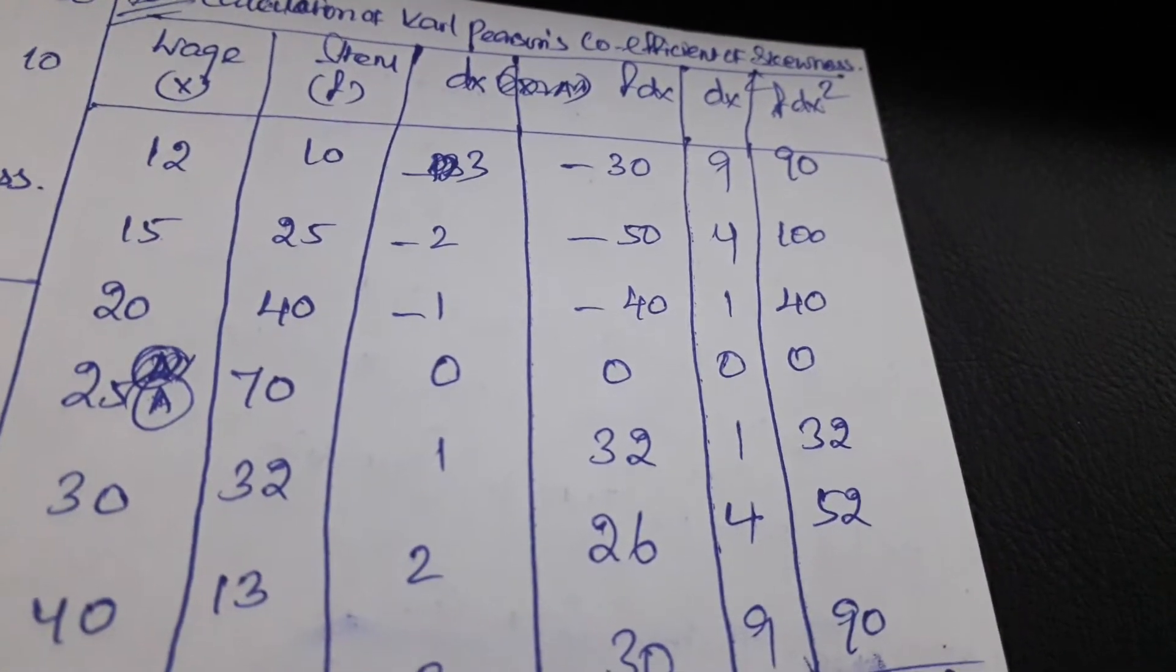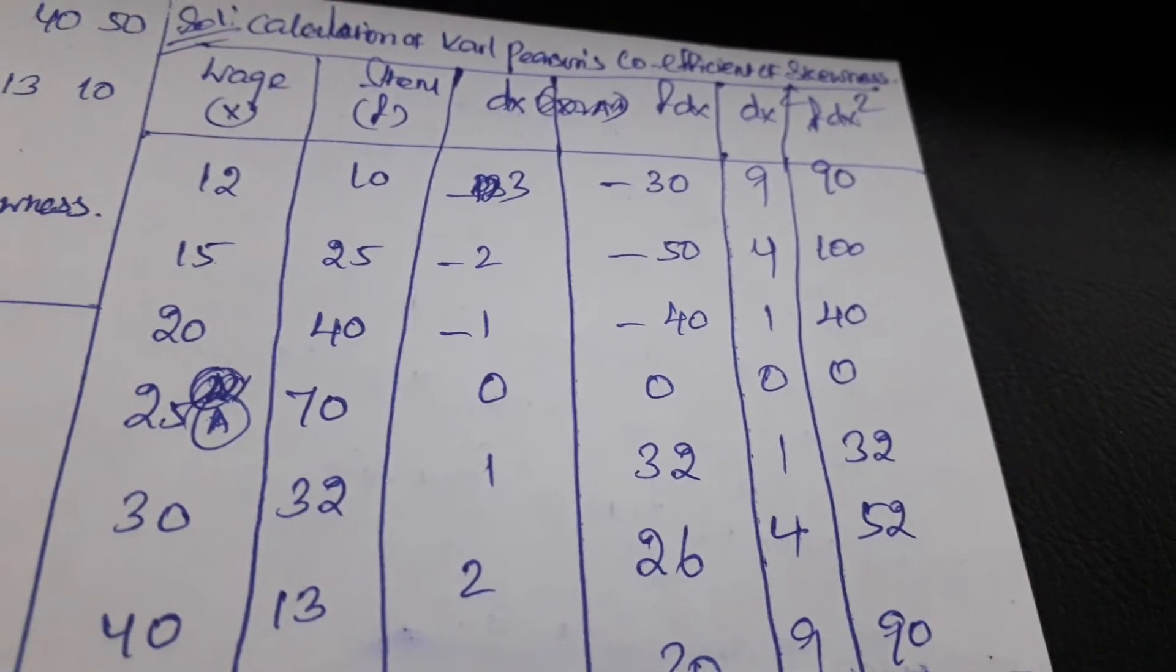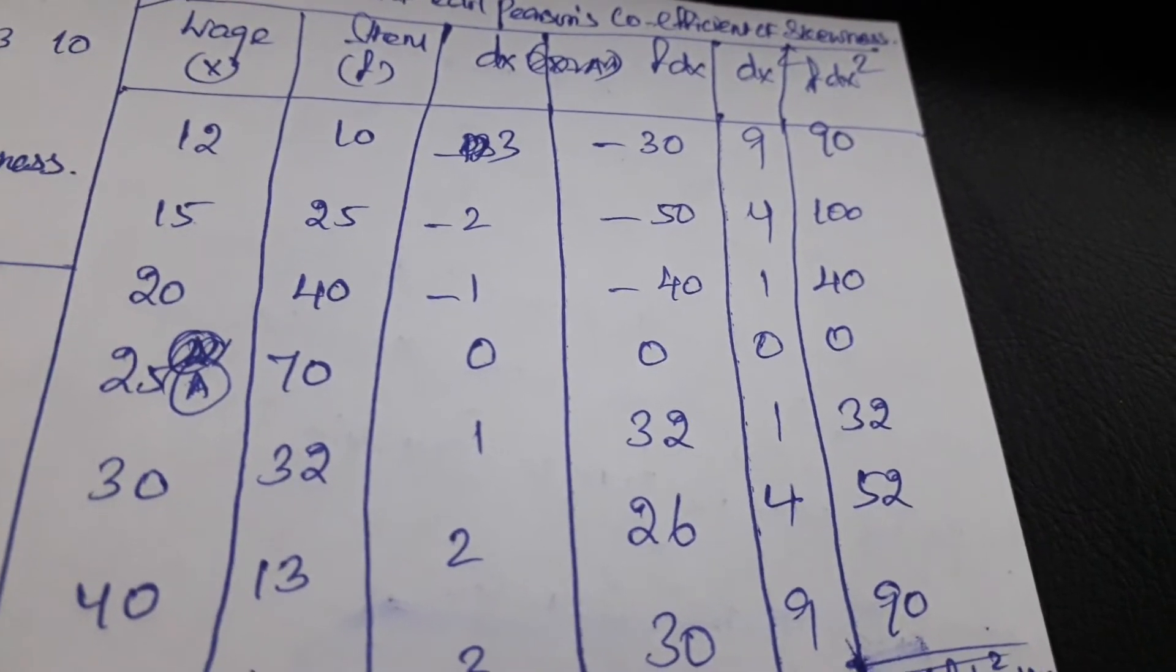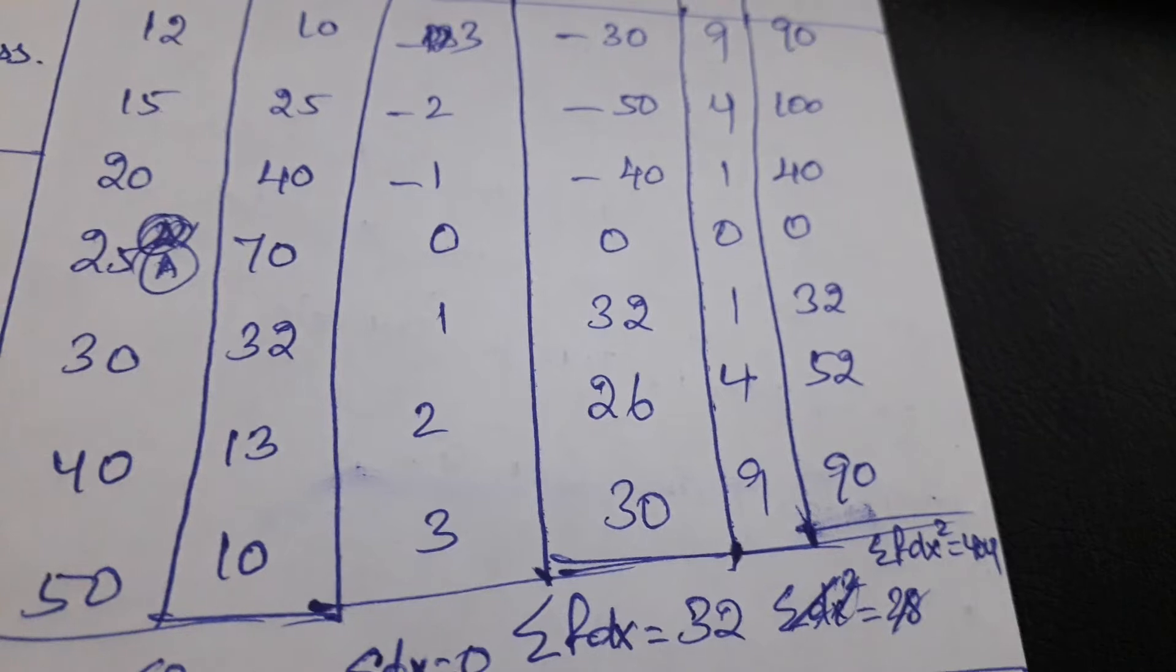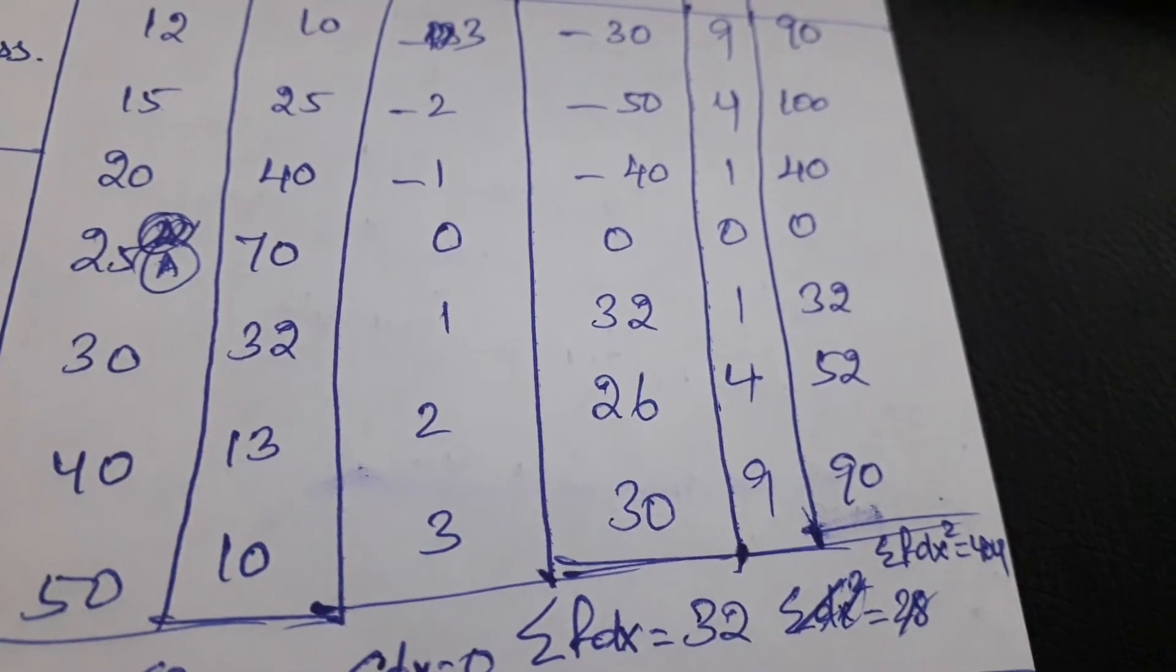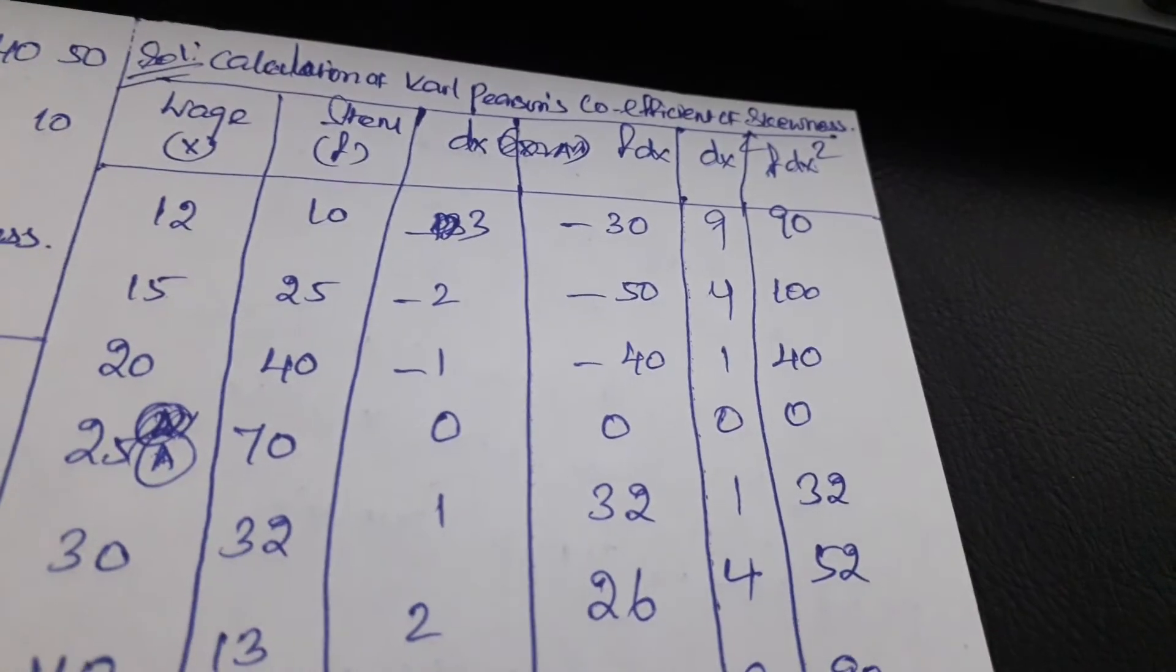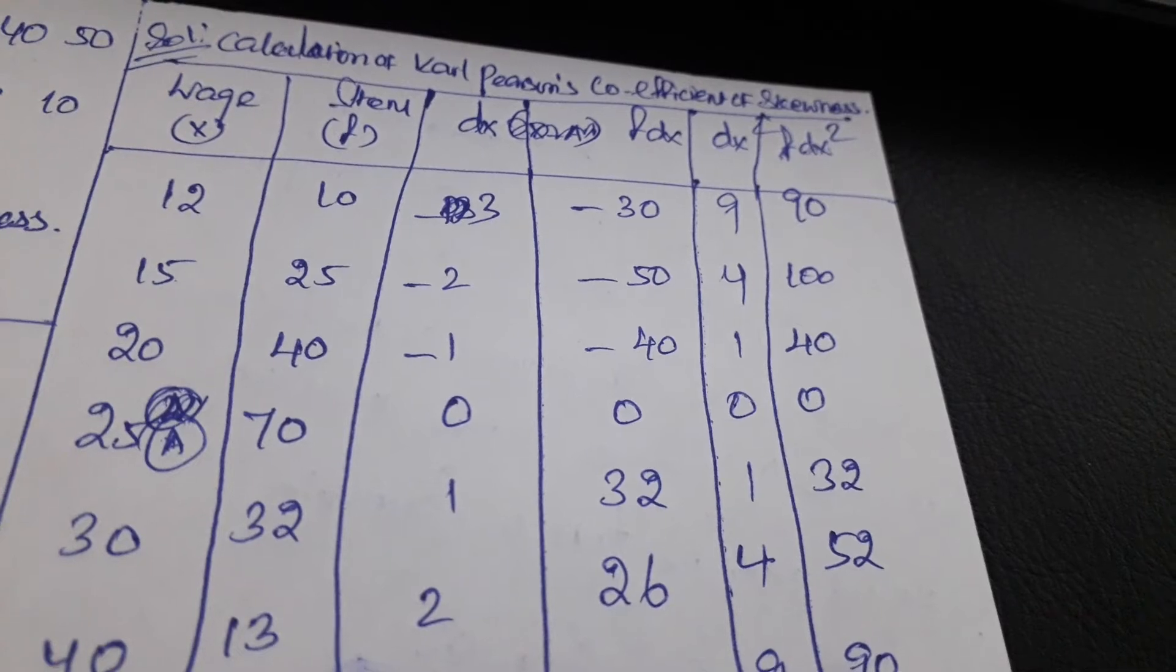It is equal to 32. Then dx squared - just square the dx and add them. We can find out the summation of dx squared as well as f of dx squared.